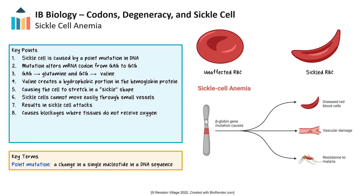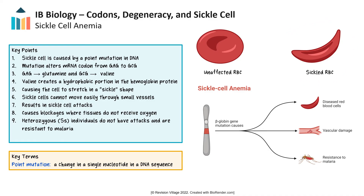However, those who are heterozygous with sickle cell — in other words, they have one allele for sickle cell and one normal allele — have enough unaffected hemoglobin where they do not experience the attacks. The mutated hemoglobin gives resistance to malaria, as the misshapen hemoglobin negatively affects the reproductive cycle of the malaria parasite. As a result, instances of sickle cell are more prevalent in populations that reside in areas where malaria spreads.